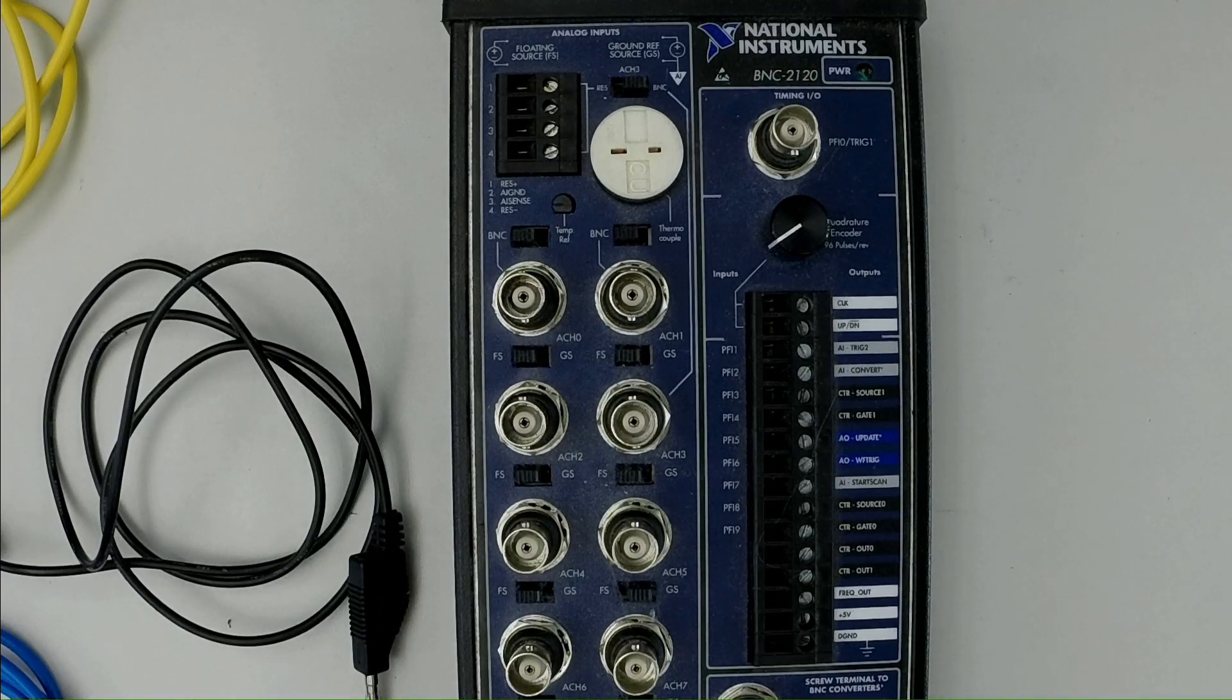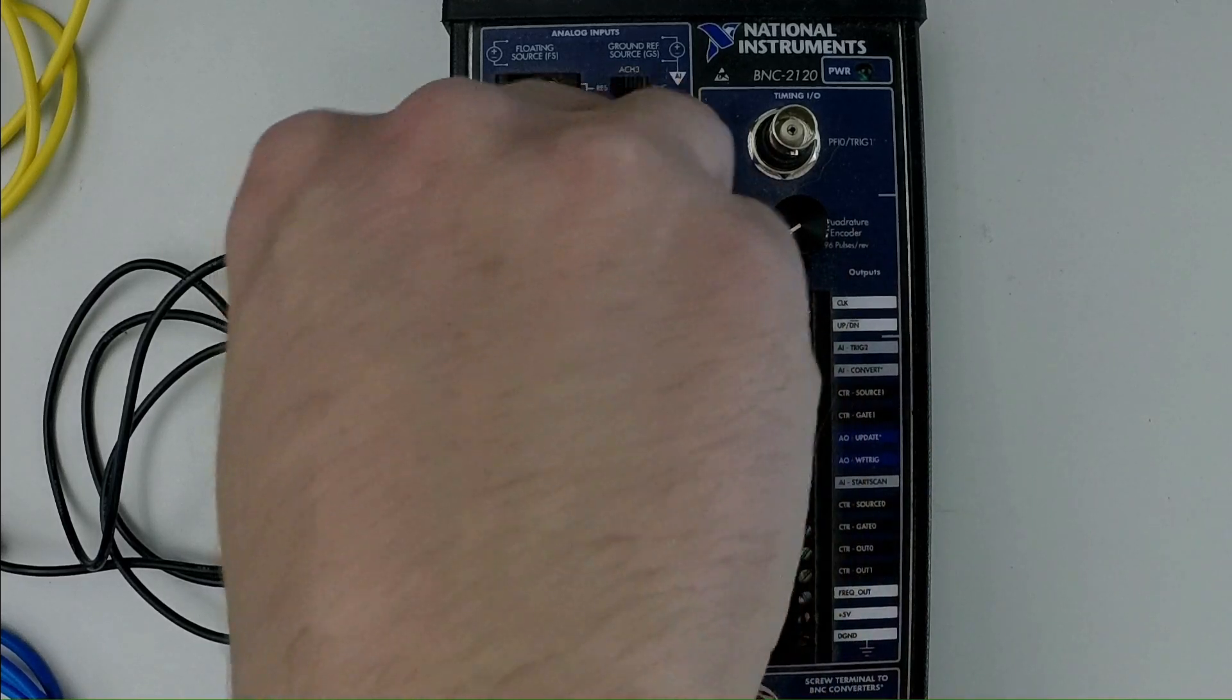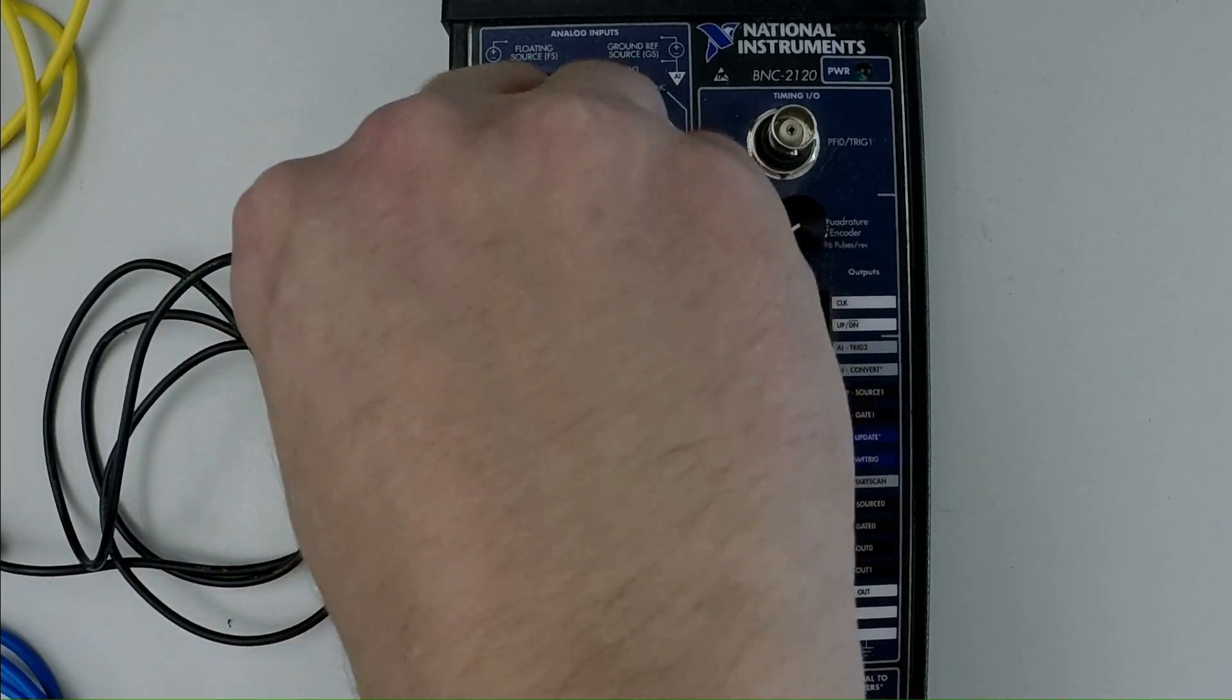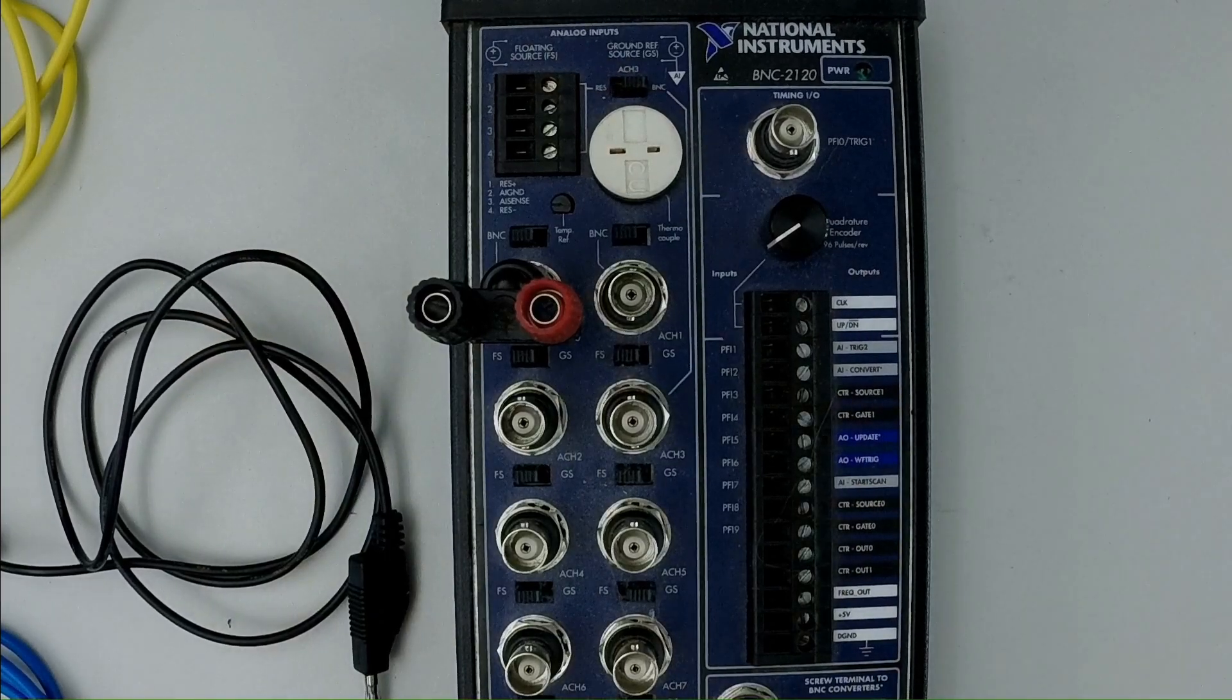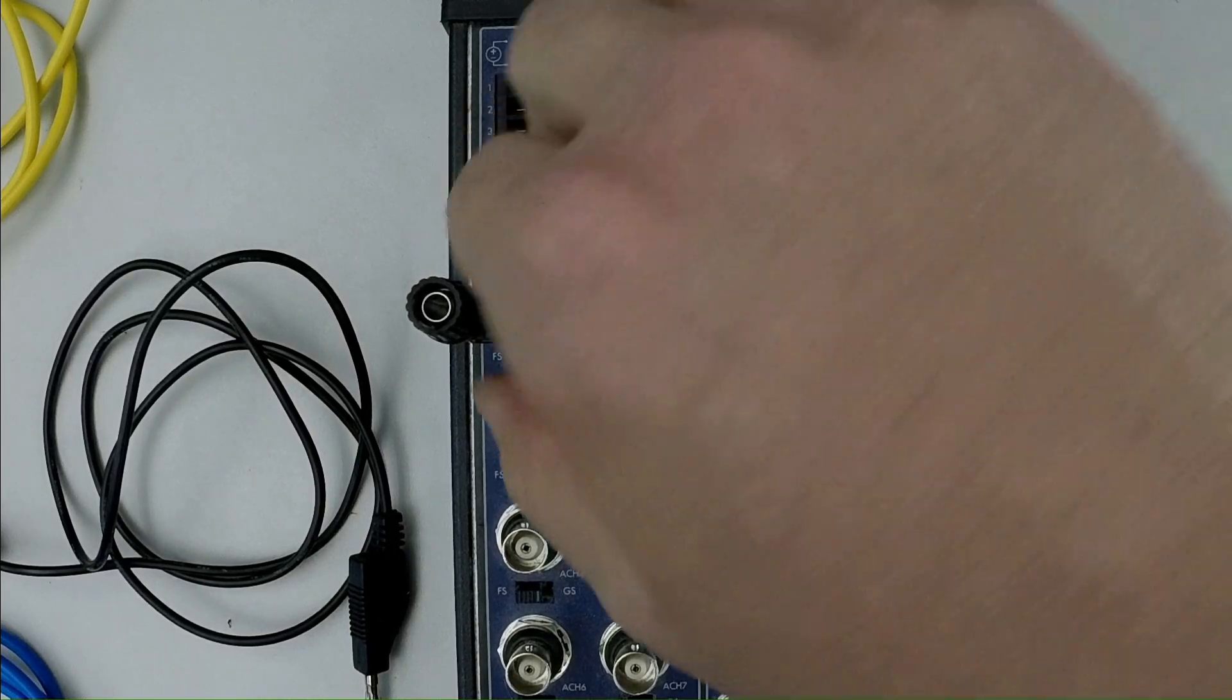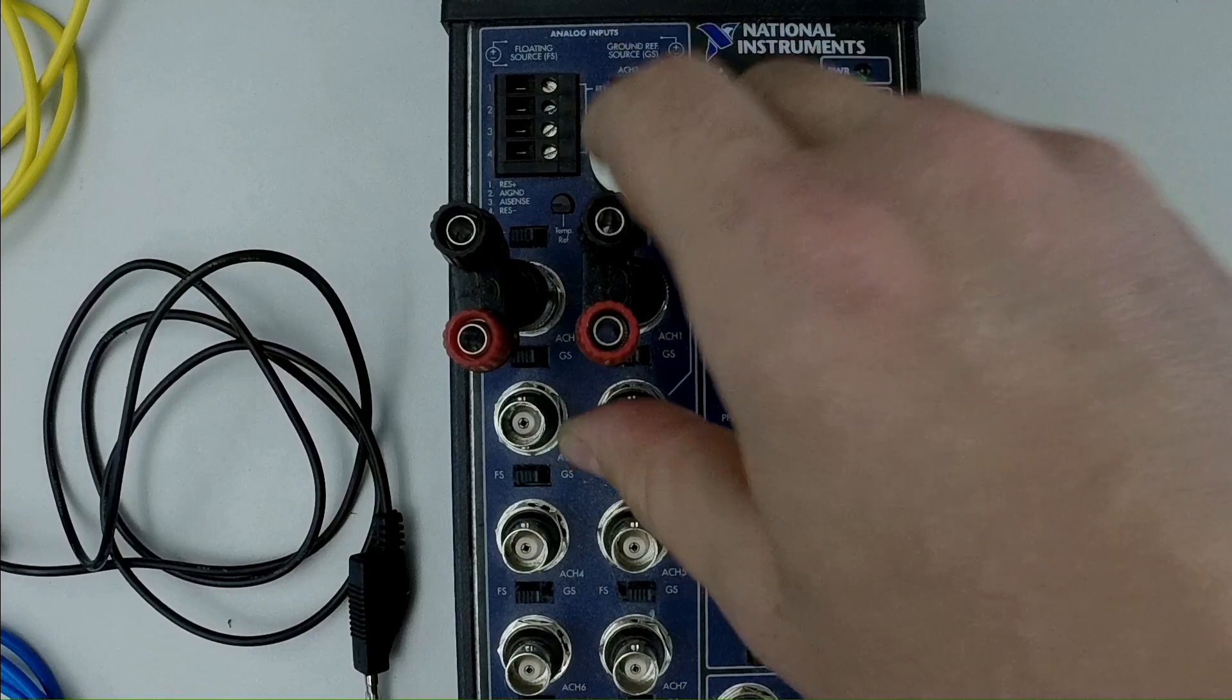So what I'm going to do is I'm going to grab my BNC to banana adapters and we'll need two of them, one for each channel. Make sure it's on there. Grab my second one here. All right, and we have our two connectors right there.